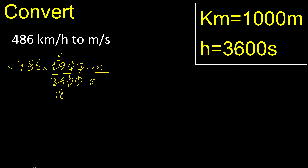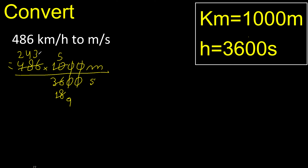This can be simplified because it can be divided by 2. Divided by 2 is 9. 243 can be divided by 9, therefore 243 divided by 9 is 27. 27 multiplied by 5 is 135.